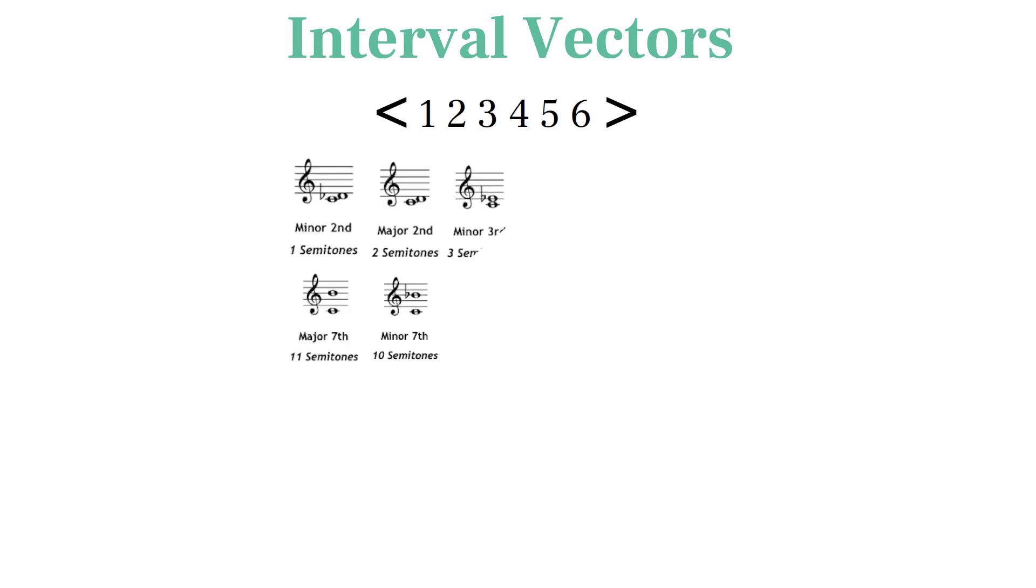The interval vector shows us how many of each primary intervals are present in a set, and it's displayed inside the greater than, less than symbols in the order of the primary intervals.